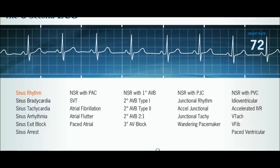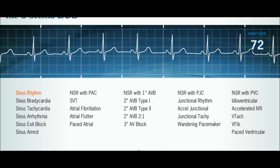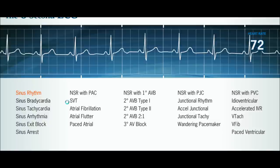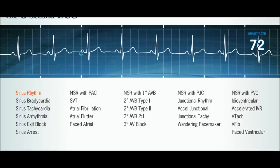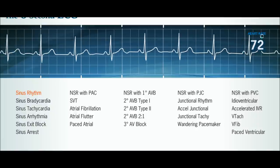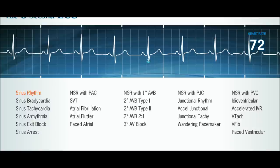Before you jump into this video, make sure you've watched the other video — the link is posted in the info. It'll really help you understand what's going on here. So as you can see, this is our normal sinus rhythm. We have a P wave of normal height, the PR interval is okay, we have our QRS, and then our T wave. The QRS is the ventricles depolarizing; the T wave is repolarization of the ventricles. The heart rate shown here is 72 beats per minute — that's normal.